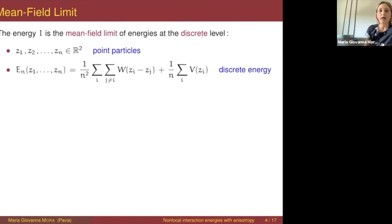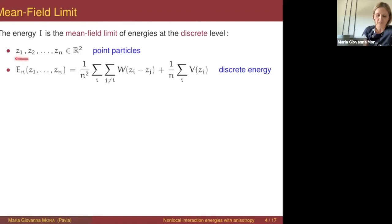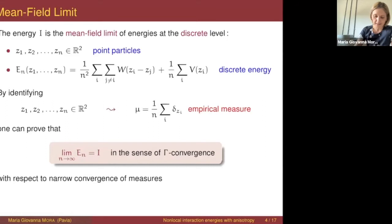The energy I gives a description at the continuum level. You can make this rigorous by describing the problem at a discrete level — particles as points located at some locations in the plane — and defining an energy at a discrete level which is a function of the locations. As n tends to infinity, so the number of particles tends to infinity, these discrete energies converge to the functional I, and you can prove this in the sense of gamma convergence.